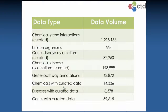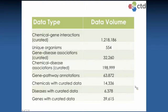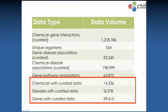Once that happens, you have access to what we now refer to as core CTD. We have over a million chemical-gene interactions. The data reflects over 500 different organisms, with pretty extensive gene and chemical-disease associations. The bottom line is this is the landscape of curated data we have for chemicals, diseases, and genes. We have 39,000 genes because of the diversity of organisms represented in the database.